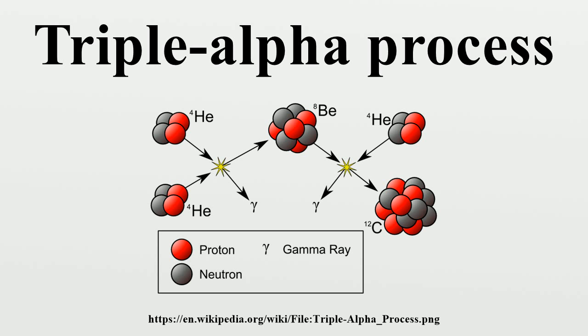This is necessary because the ground state of 12C is 7.3367 MeV below the energy of 8Be plus 4He. Therefore a 8Be nucleus and a 4He nucleus cannot reasonably fuse directly into a ground state 12C nucleus. The excited Hoyle state of 12C is 7.656 MeV above the ground state of 12C.